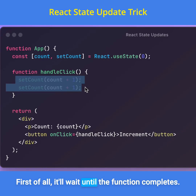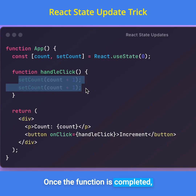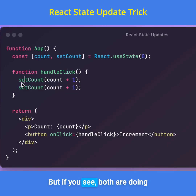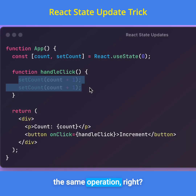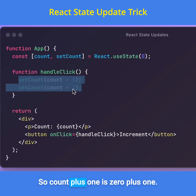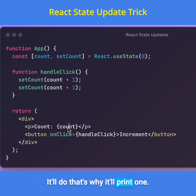First of all it will wait until the function completes. Once the function is completed, it will try to execute these updates. But if you see, both are doing the same operation, right? So it will consider both as the same. That's why it will update only one value — count plus 1 is 0 plus 1, so it will print 1.